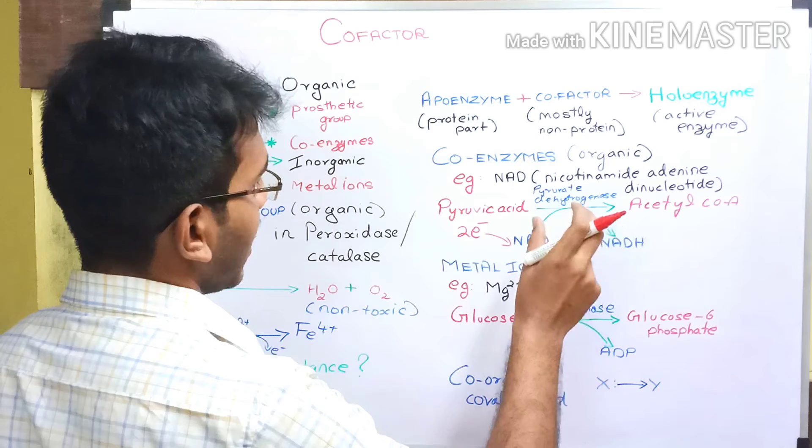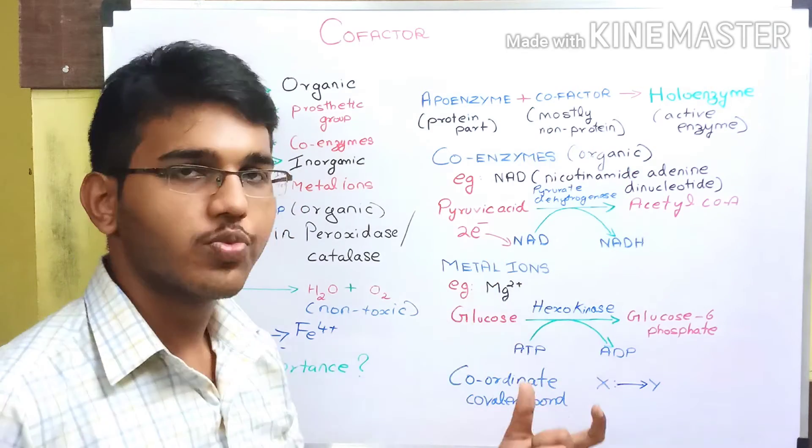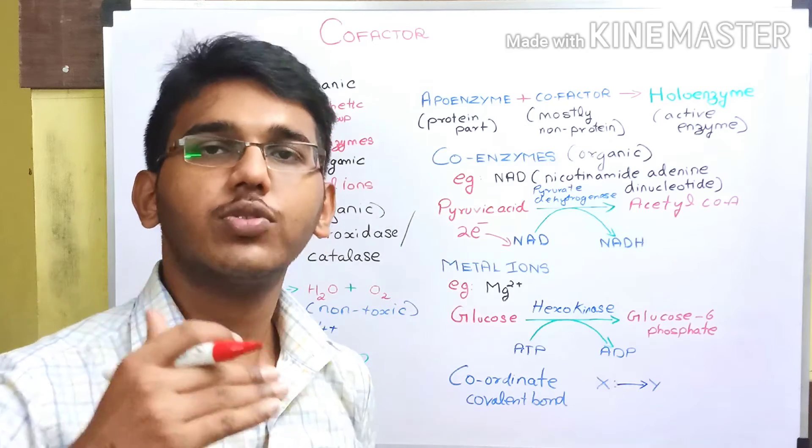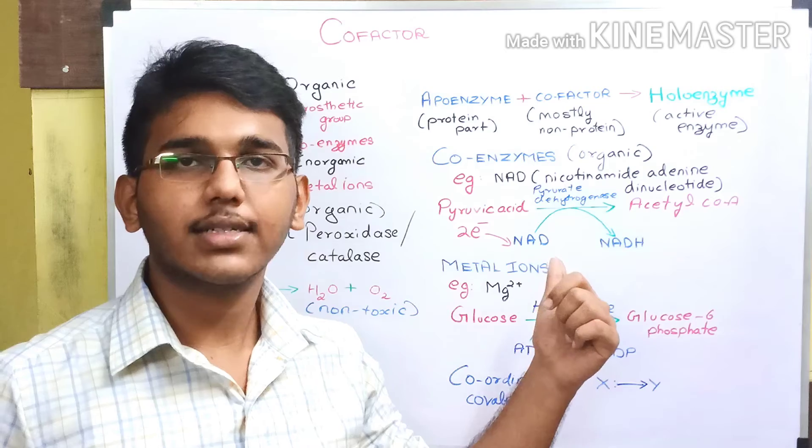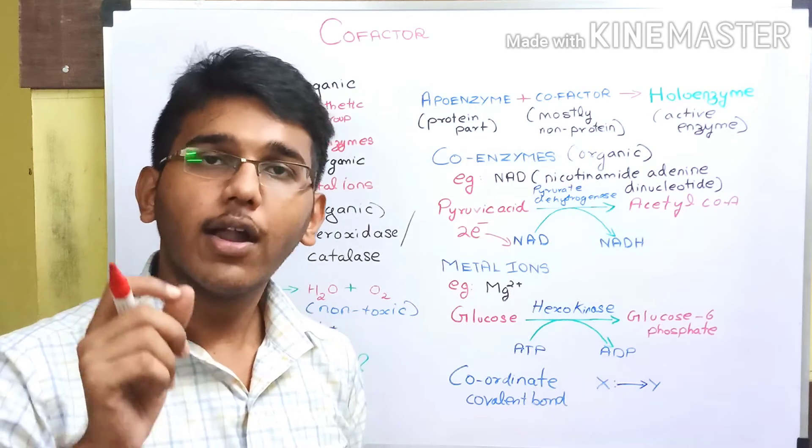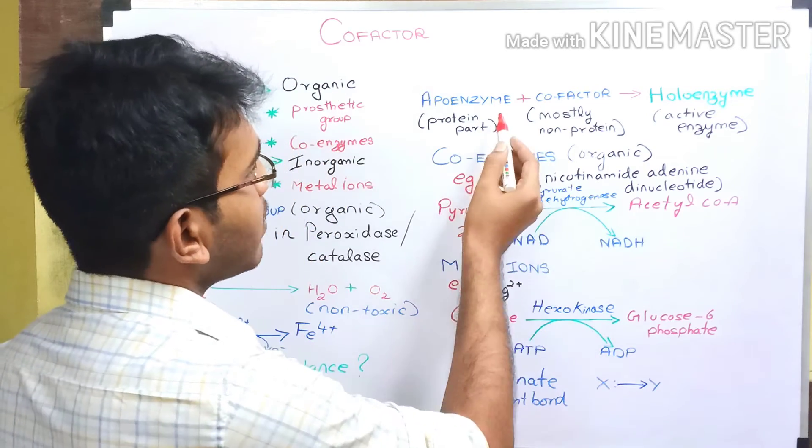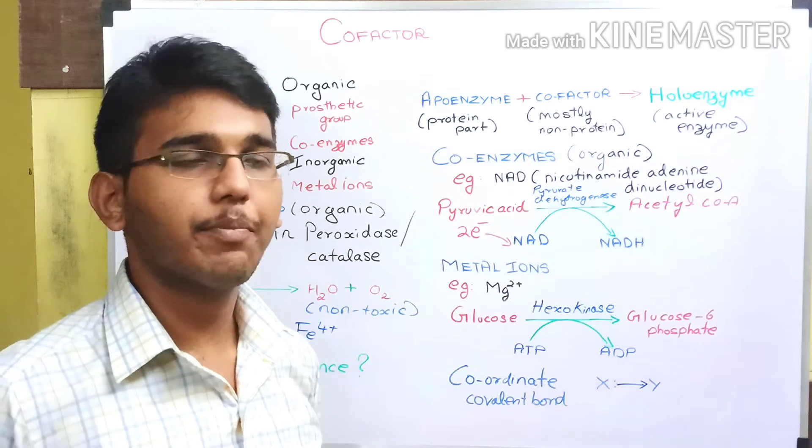This NADH is reformed, that is it is regenerated when the NADH moves to the electron transport chain, loses the electron acquired from this reaction and again forms NAD. So this is a cyclic reaction. We have already told that the interaction between the apoenzyme and the coenzyme is short-lived, which is shown clearly in this example.